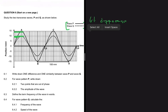So one wave has an amplitude of 15 millimeters while the other has an amplitude of 10 millimeters. Just to remind you, amplitude is the maximum displacement from rest or equilibrium position. So they differ in their amplitudes.